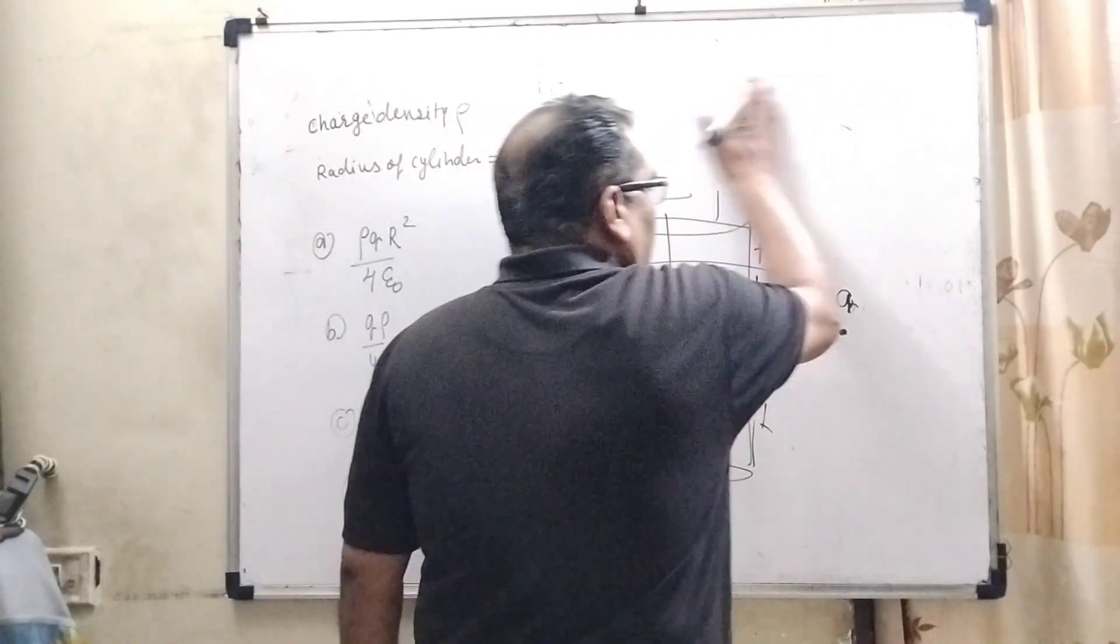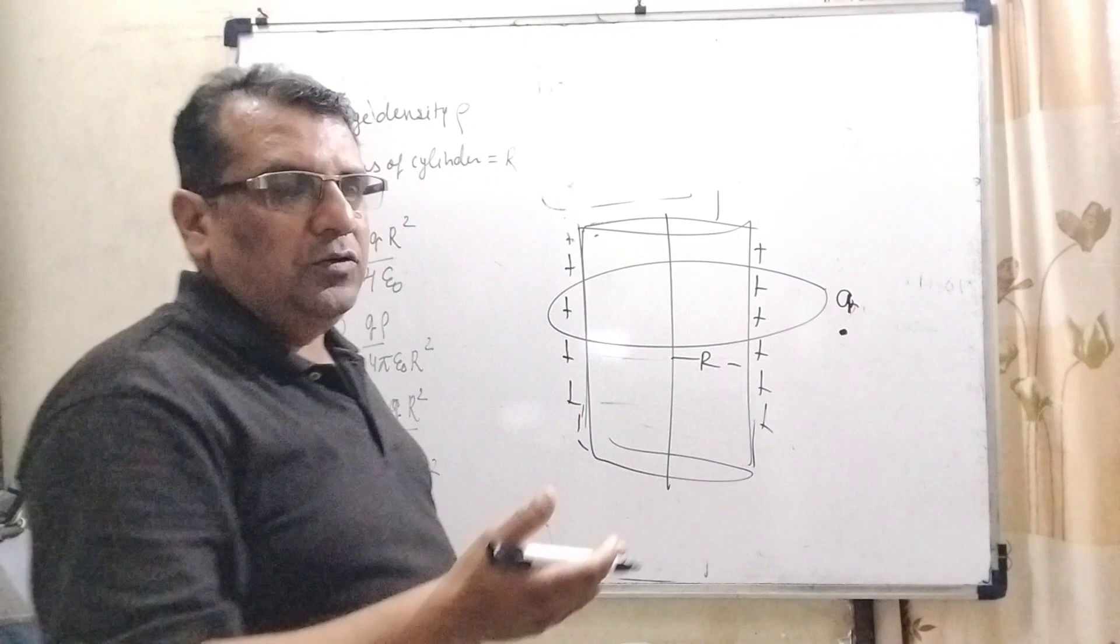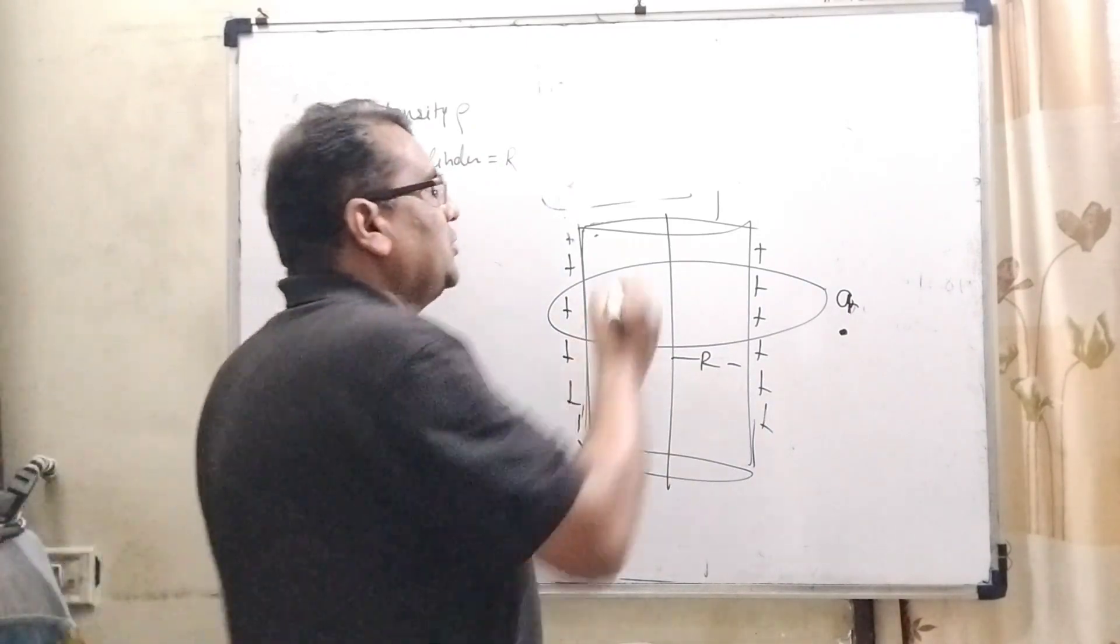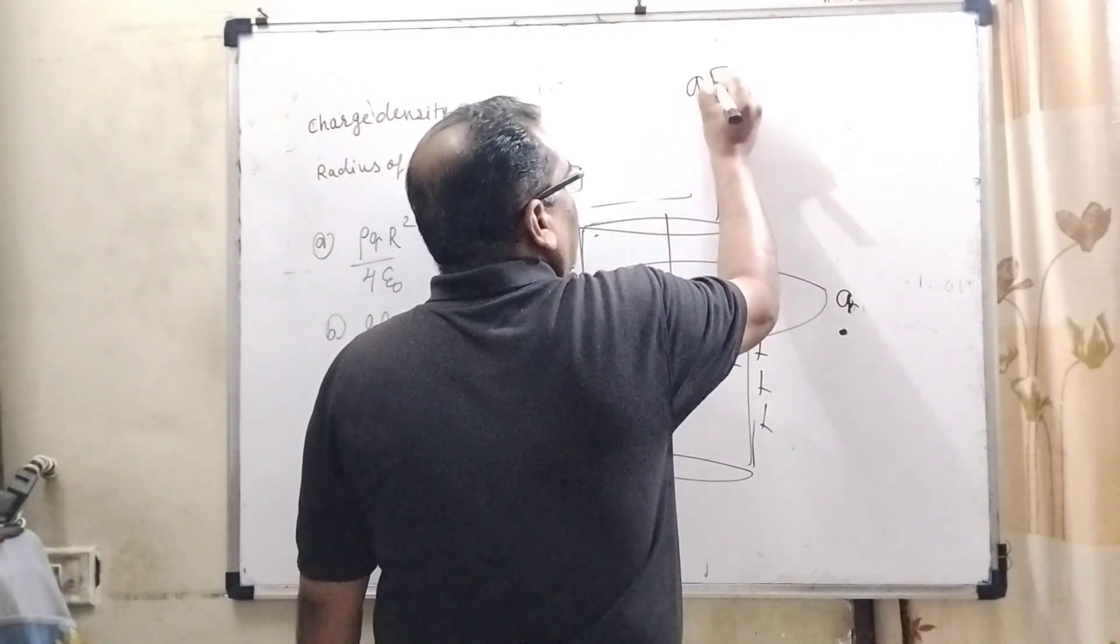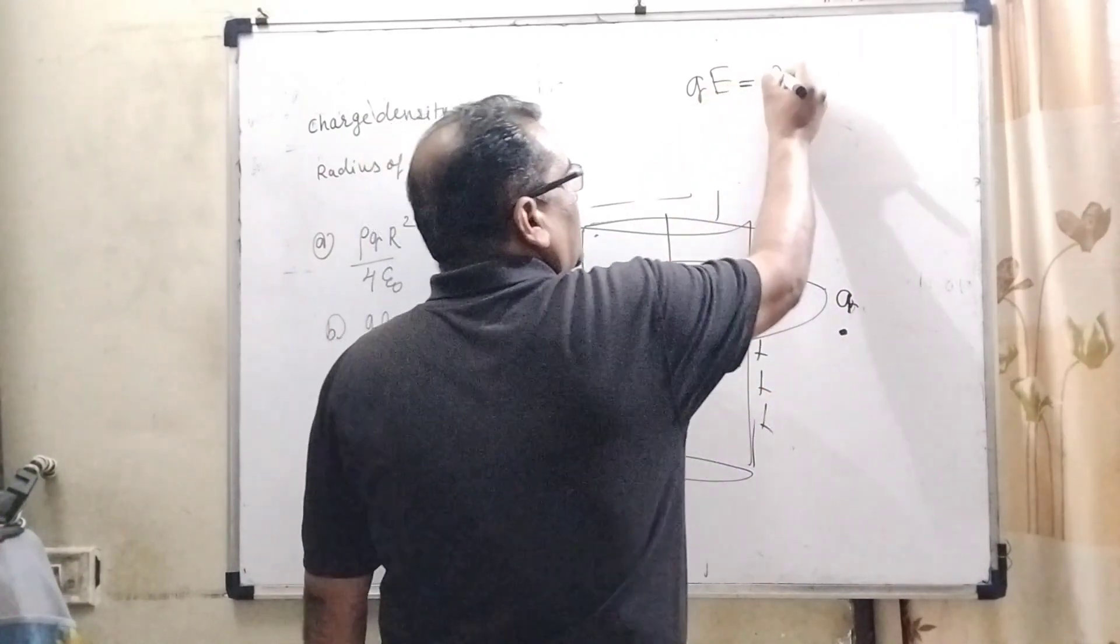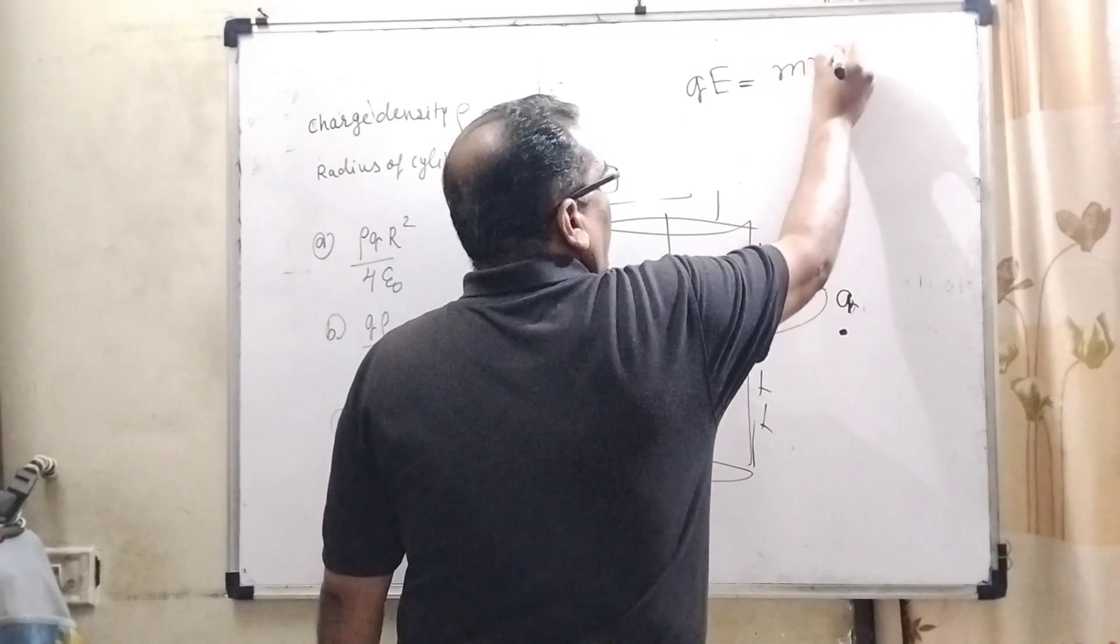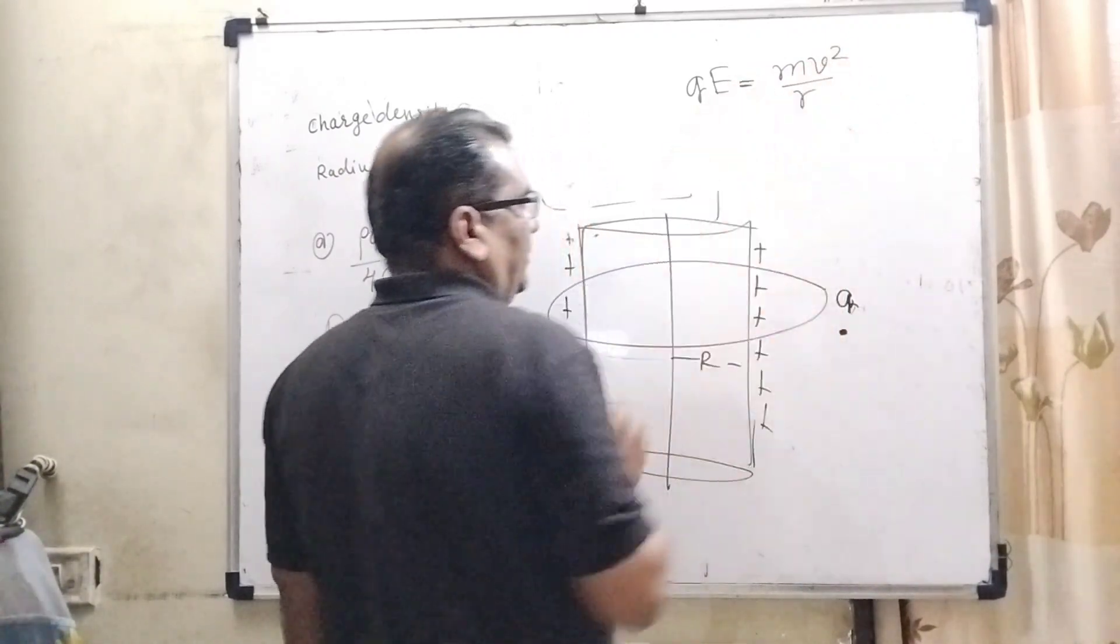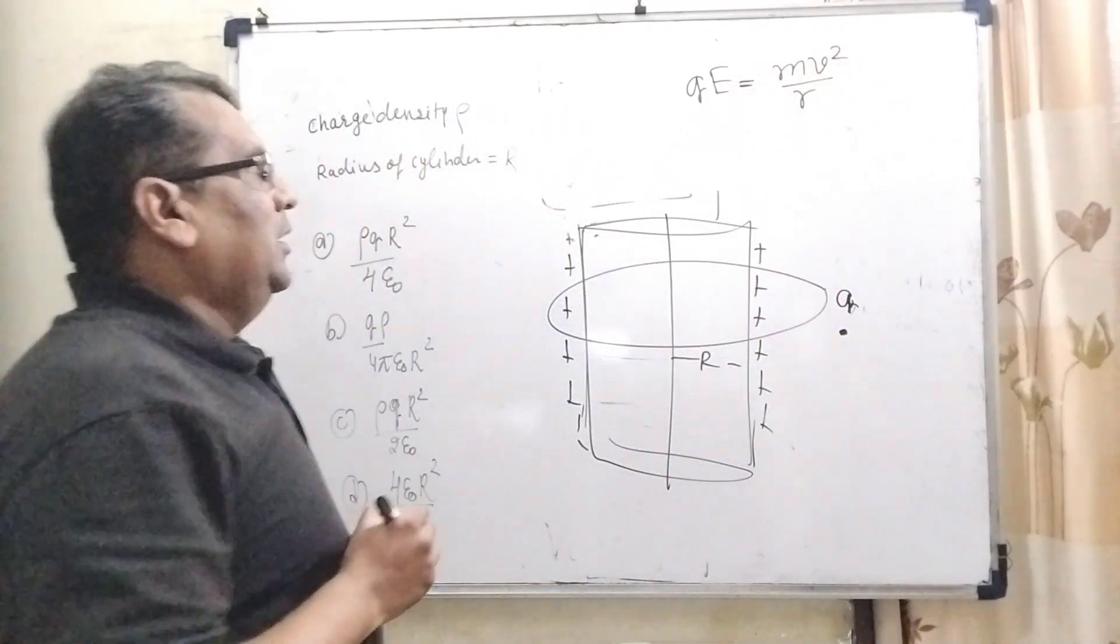So here, the electron revolves around the cylinder due to electrostatic force. So QE, that is the electrostatic force, provides centripetal force. So QE = mv²/R.